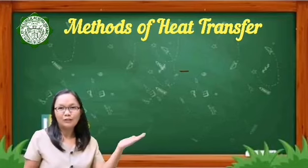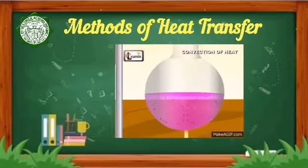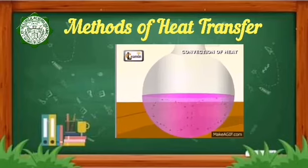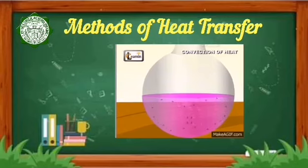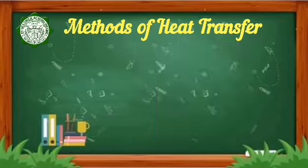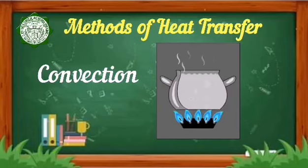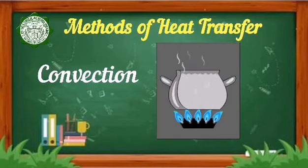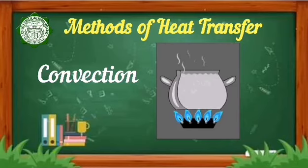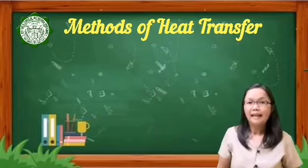Number 2: Convection. Convection occurs when particles with a lot of heat energy in a liquid or gas move and take the place of particles with less heat energy. Heat energy is transferred from hot places to cooler places by convection. An example of convection is boiling water in a pot. When a fluid, such as air or a liquid, is heated and then travels away from the source, it carries the thermal energy along.